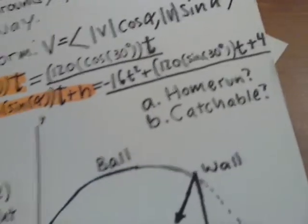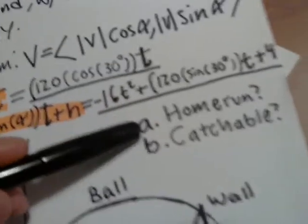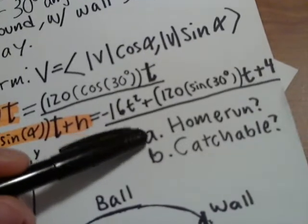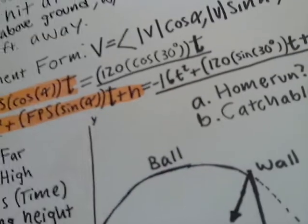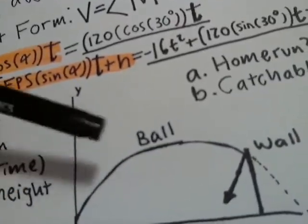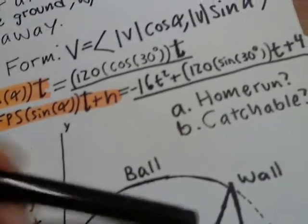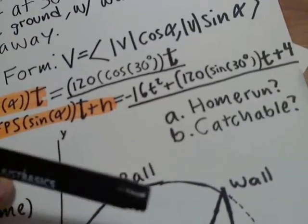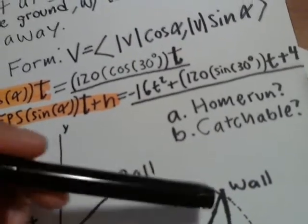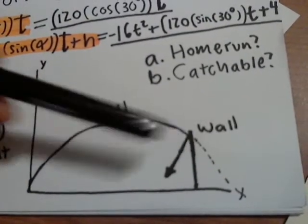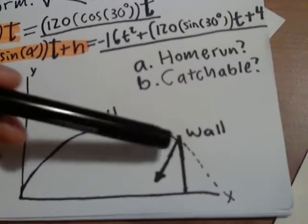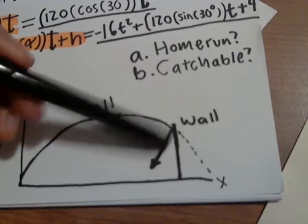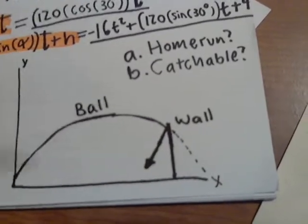What the question is asking is: a) did it go for a homerun? and b) is it catchable? For a, it obviously wasn't a homerun. For b, is it catchable? I would say so because it hits the very tip top of the wall and ricochets back into the outfield.